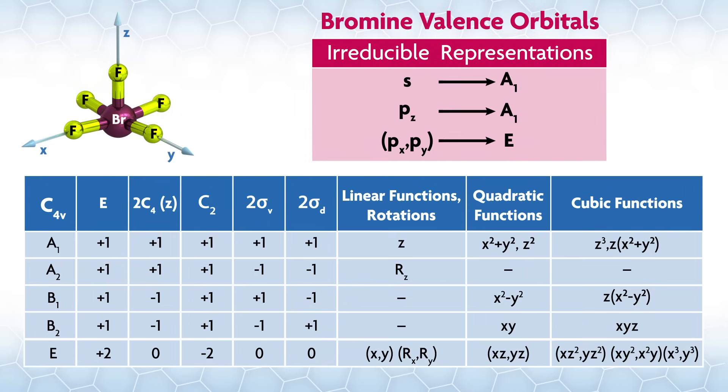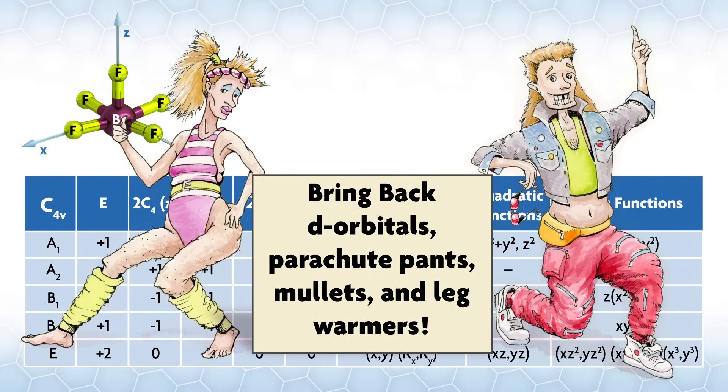For every main group element, like bromine, we only have one s orbital and three p orbitals in the valence set. There was a time when chemists proposed that the heavier main group elements could access d orbitals, but scientists working in the field threw that idea out in the 80s with parachute pants, mullets, and leg warmers. Any of those things are more likely to make a comeback than d orbitals in main group bonding.